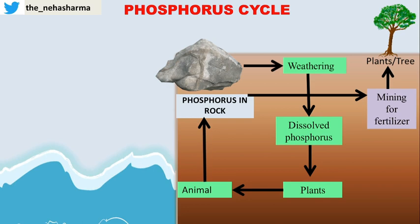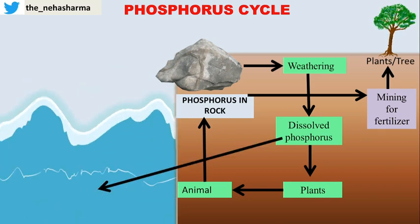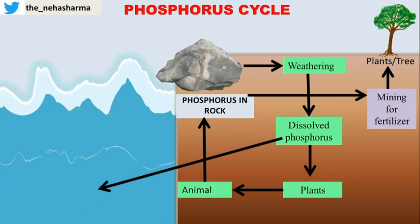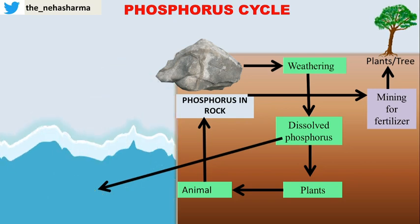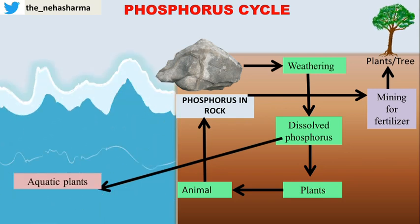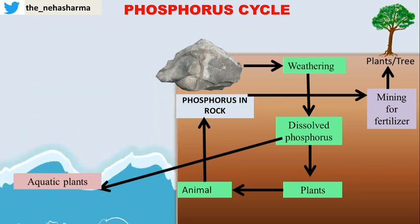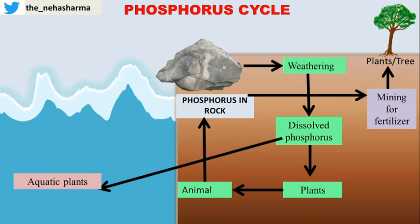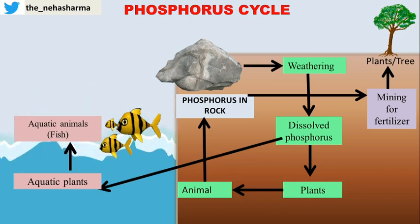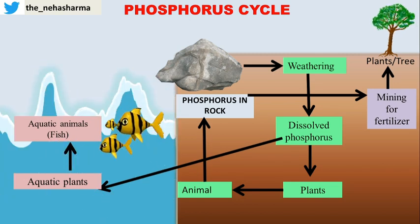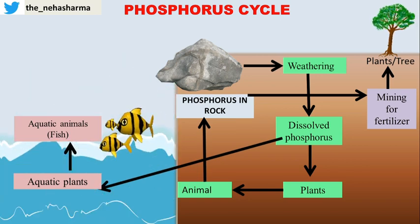The dissolved phosphorus available after weathering may also get washed away with rainfall and join nearby oceans or lakes. This dissolved phosphorus, now available in ocean water, will be utilized by aquatic plants for their growth and development. Aquatic plants are further consumed by aquatic animals like fish, so marine animals have a high reservoir of phosphorus in their bodies.